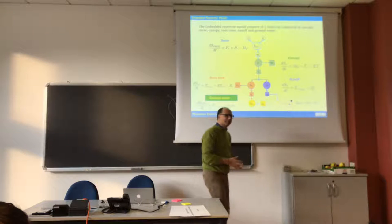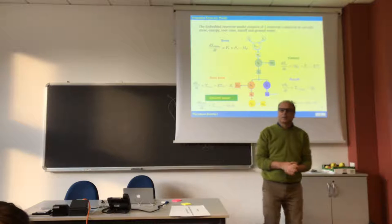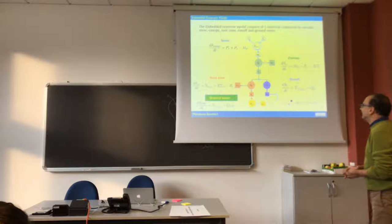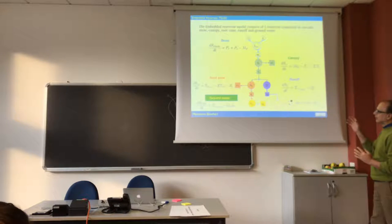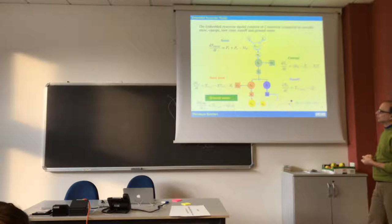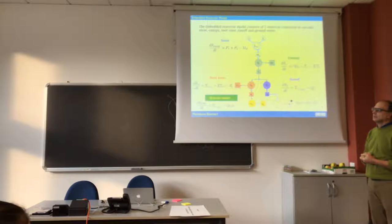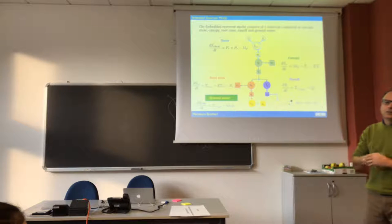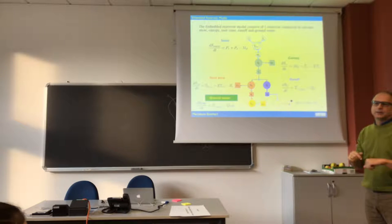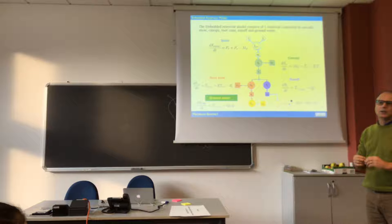So this is the embedded reservoir model for Paolo and for everybody. And you have a snow model up there. And here I start to put the equations, but also there is a direct correspondence between the graph and the equations, meaning at least in this external form. What do I mean by external form? I mean that we have the fluxes in and out, but the dependence of the fluxes on the state variable, which are the variables inside the balls, is not yet specified.